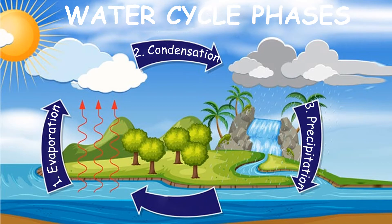When the water comes back to the surface, it accumulates in rivers, seas, and lakes. We call this process accumulation — when the water returns to the surface.